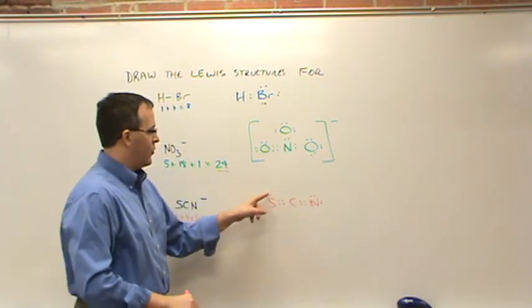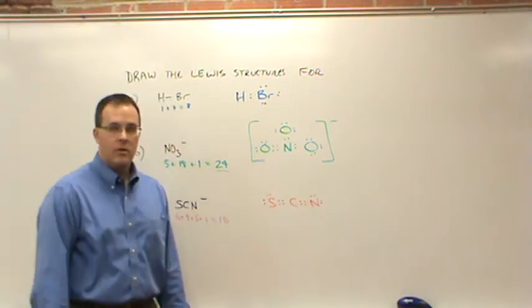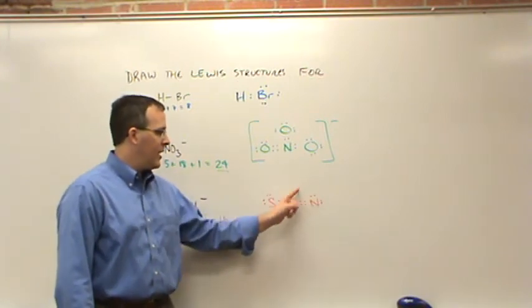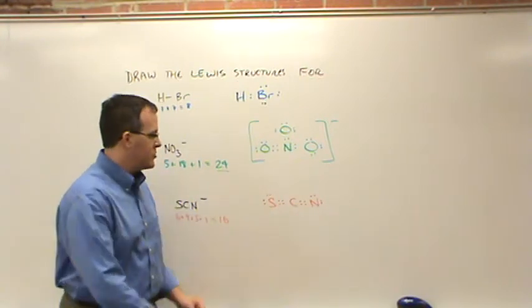So what have we got now? Two, four, six, eight, ten, twelve, fourteen, sixteen. That works. I've got eight around my S, eight around the C, eight around the N. So I could draw this structure. SCN with a negative charge.